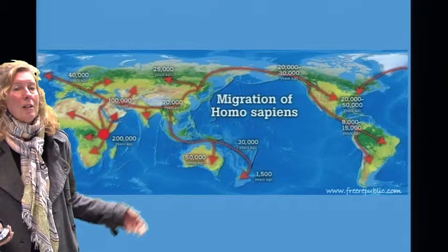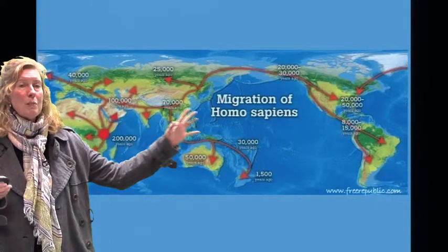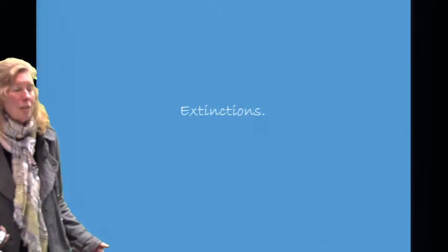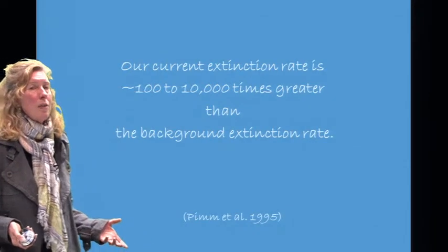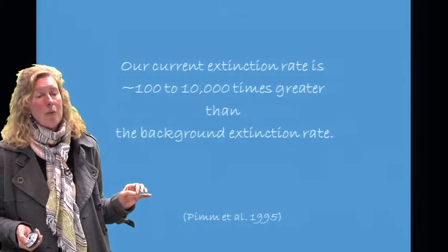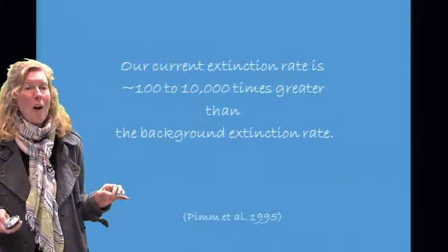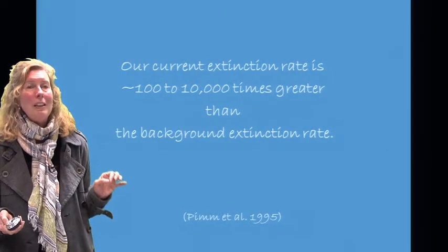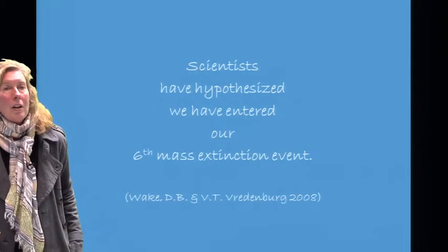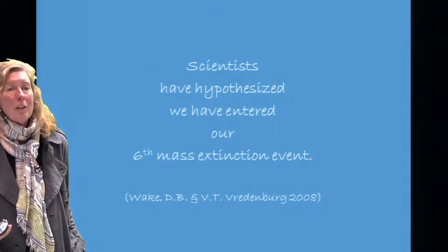Approximately 200,000 years ago, we see the origin of humans in Africa. Humans then began to disperse across the continents, and by about 10,000 years ago, we begin to see many extinctions. Our current extinction rate is approximately 100 to 10,000 times greater than our background extinction rate — the pre-human extinction rate. Scientists have hypothesized that we have entered our sixth mass extinction event, and that this is primarily due to humans.